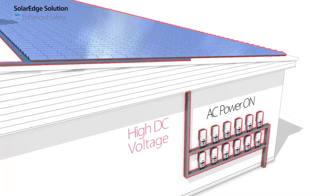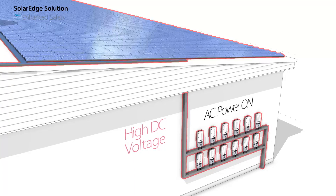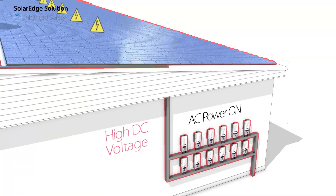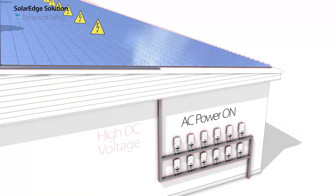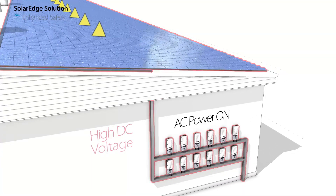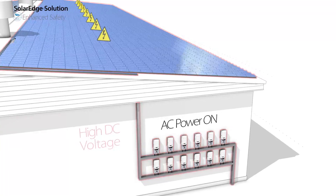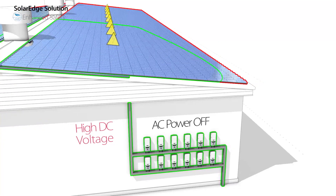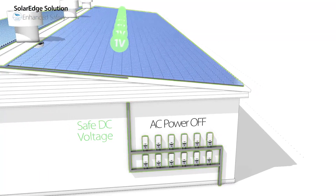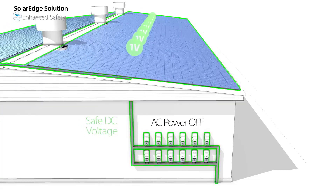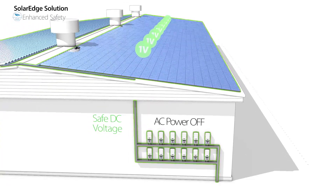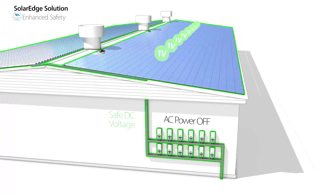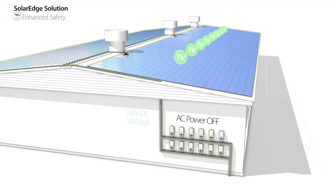To provide enhanced safety, we have incorporated panel-level safety mechanisms to protect installers, electricians, maintenance personnel, and firefighters. With the SolarEdge solution, whenever AC power is off, the high DC voltage of the string is reduced to a safe voltage. This solution meets new safety regulations in the major PV markets in which we operate around the world.